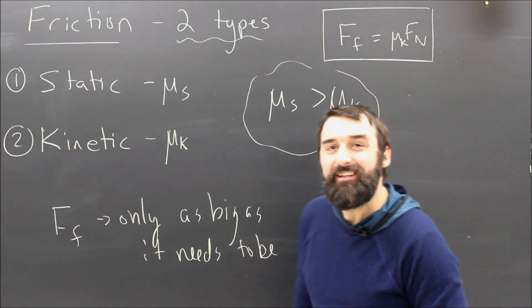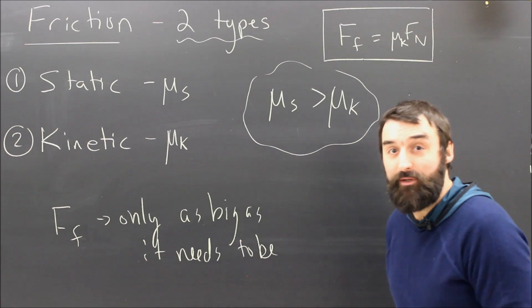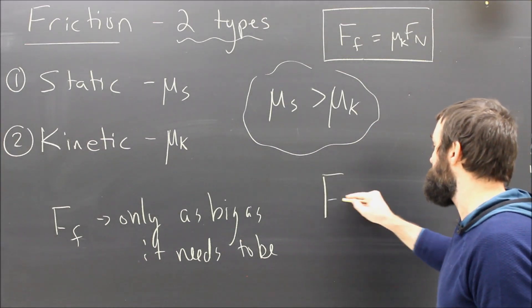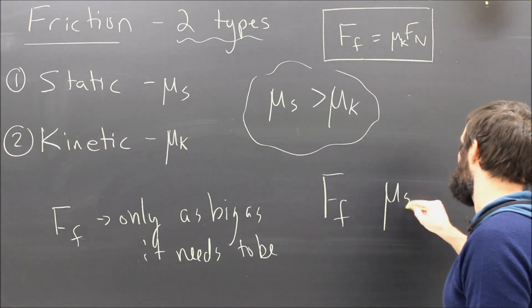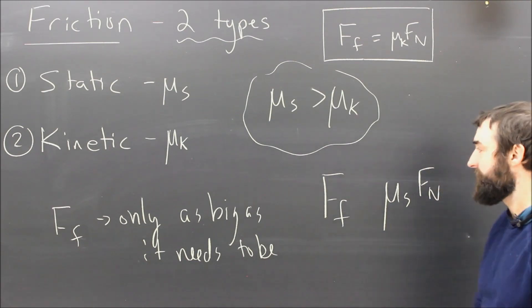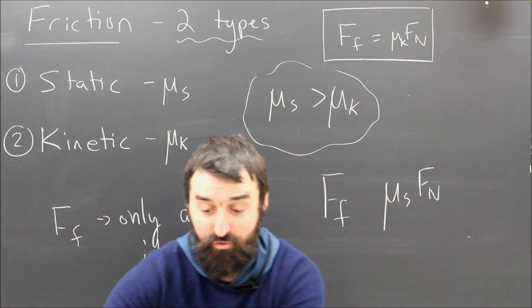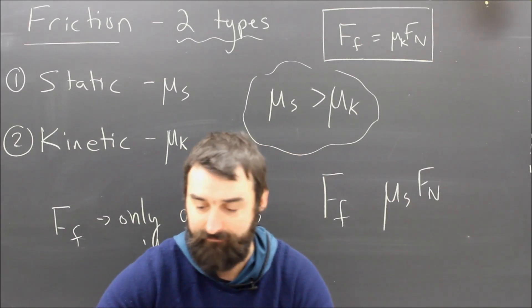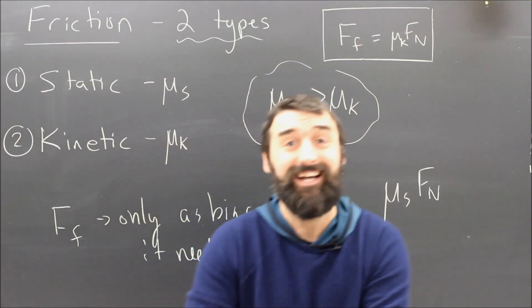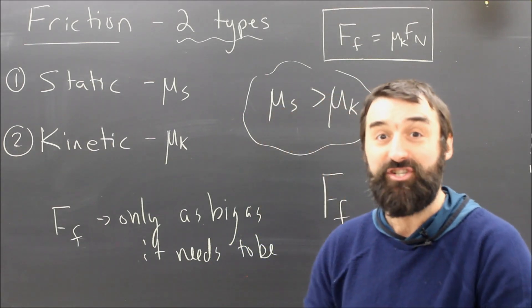Which means that if we're calculating the friction and we know our situation is static, then this formula will not give us the right answer necessarily. If I put in mu and if I put in Fn here, I'll calculate 12 Newtons in my book example.